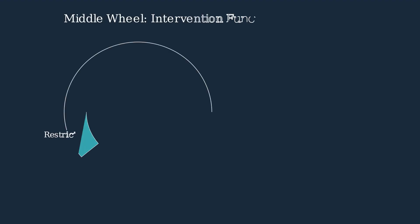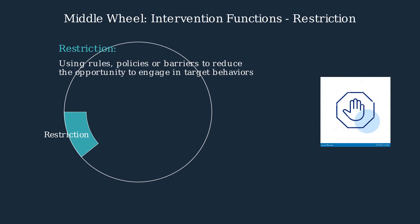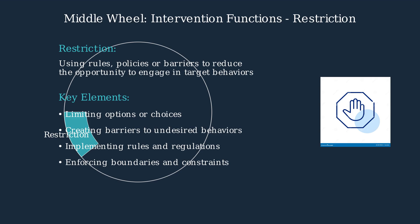The middle wheel of the behavior change wheel contains several intervention functions. This section focuses on restriction. Restriction involves using rules, policies, or barriers to reduce the opportunity to engage in target behaviors. It works by limiting options, creating barriers, implementing rules, and enforcing boundaries to prevent unwanted behaviors.